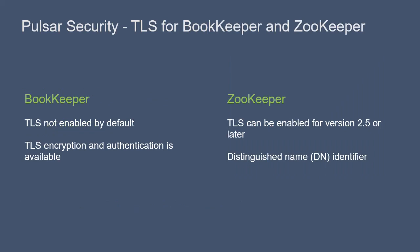Like Pulsar, TLS is not enabled by default for BookKeeper. However, TLS encryption and authentication is available. Bookies are required to each have their own key and certificate. For mutual authentication, clients need to provide a key and a certificate as well.